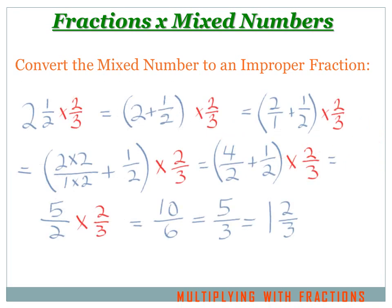We just figured out how to convert a mixed number to an improper fraction. Now let's multiply that mixed number times a fraction by converting the mixed number to an improper fraction and then multiplying. Let's try this problem: 2 and 1 half times 2 thirds.